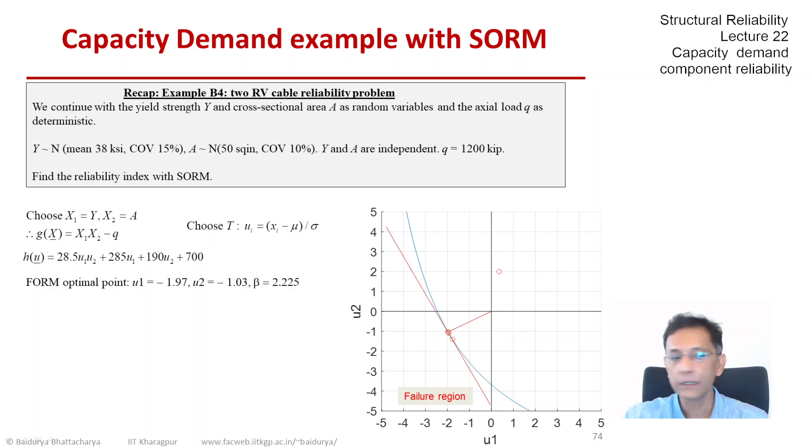So we had reached up to this point when we looked at FORM. This red line was the approximate linear function that we fitted at the minimum distance point and the probability of failure or the reliability corresponding to this straight line when dealing with FORM.